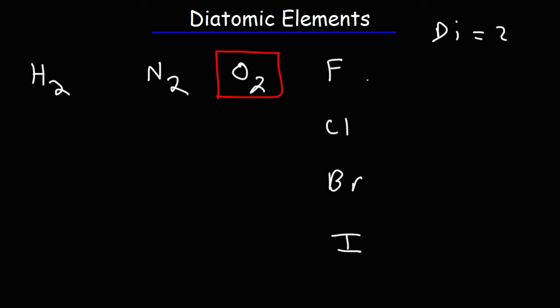Fluorine, in its natural state, exists as F2. It's also diatomic. Chlorine gas, Cl2. Bromine is a liquid at room temperature, but it exists as a diatomic molecule, Br2. And iodine is a solid at room temperature. It exists as I2.